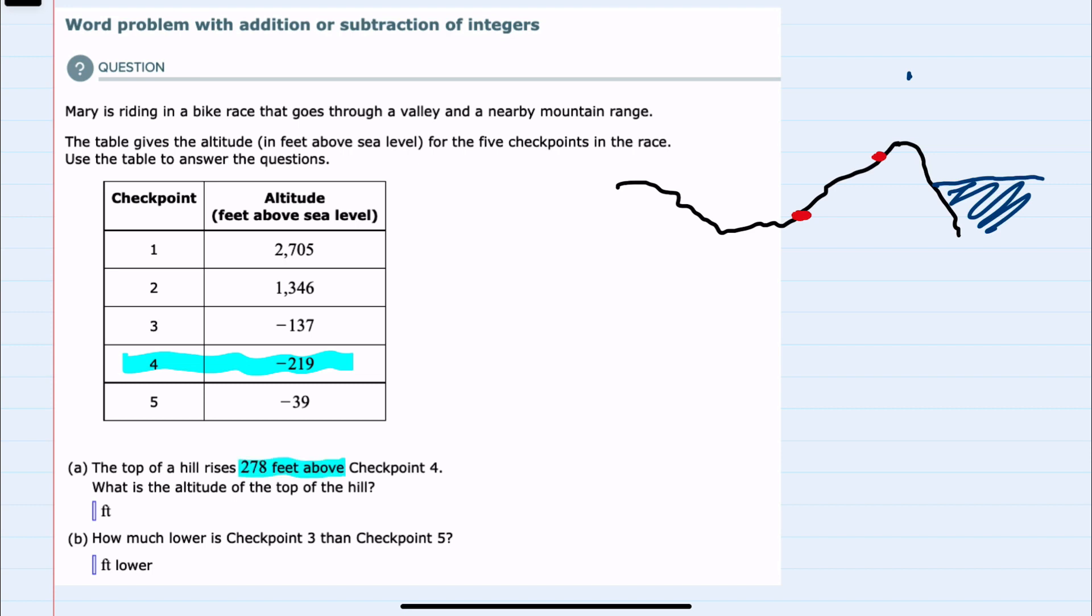To find that height we would start with checkpoint 4 which is negative 219. And then since the hill is 278 feet above that we would add 278.